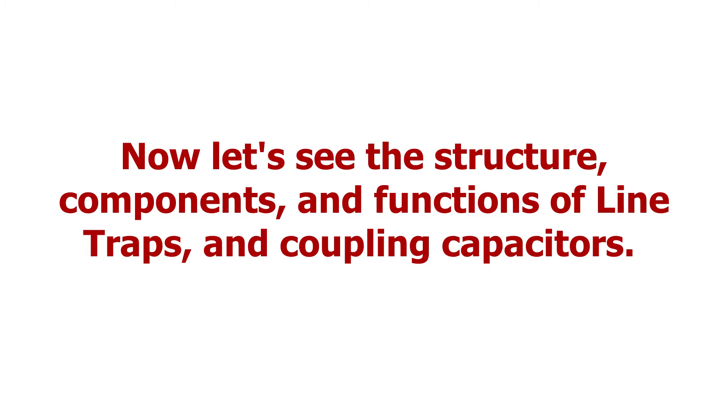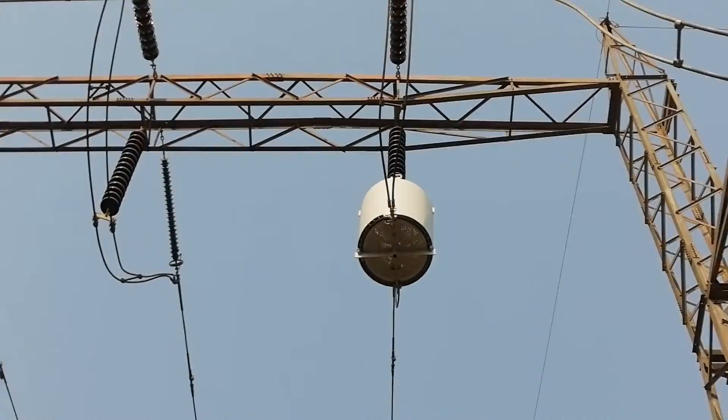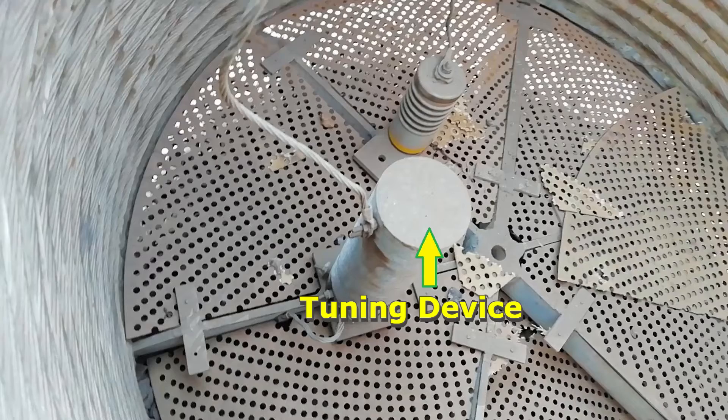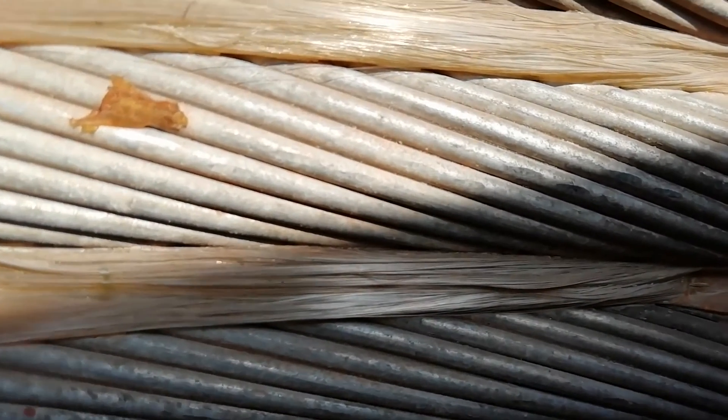Now let's see the structure, components, and functions of line traps and coupling capacitors. The components of the line trap are the main coil, tuning device, and protective device, also called a surge arrestor. The main coil is made from a stranded aluminum conductor. The current carrying capacity of the line trap is decided based on the number of strands — more strands means greater cross-section area and higher current carrying capacity. This stranded aluminum coil is wound in single or multiple layers, and cooling ducts are created between layers with spacer bars made of epoxy resin and fiberglass for heat dissipation.